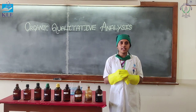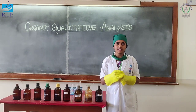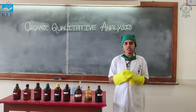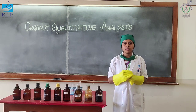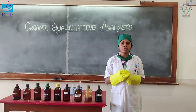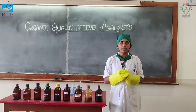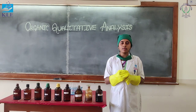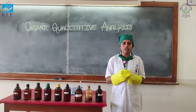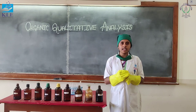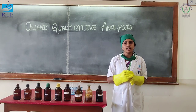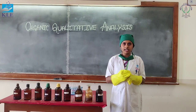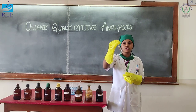The fifth test is the elemental analysis. To perform elemental analysis, we need a stock solution. To prepare the stock solution, take a small piece of sodium in a sodium fusion tube and heat it gently to melt it. Add a small amount of substance until the bottom of the tube becomes red hot. Then put it into a china dish containing water and break it with a wire mesh. Boil it and filter it. This filtrate is the stock solution.